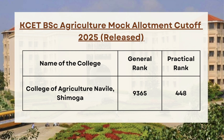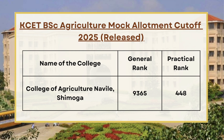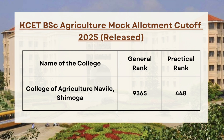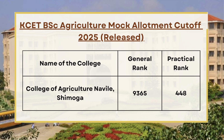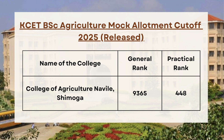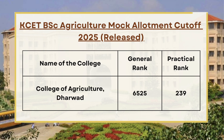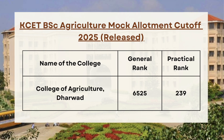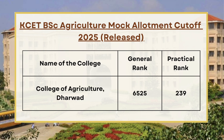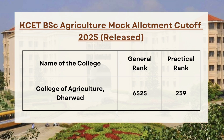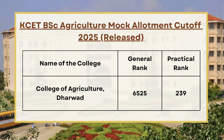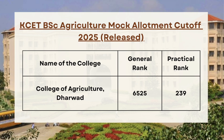Next in the list we have College of Agriculture, so for general the cutoff is 9365 and for practical the cutoff is 448. Moving ahead in the list we have College of Agriculture Dharagot, so for general the cutoff is 6525 and for practical the cutoff is 239.